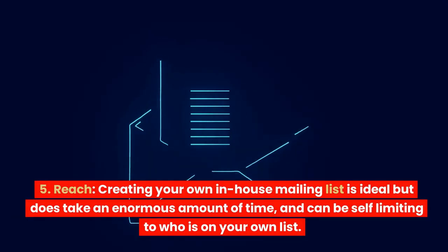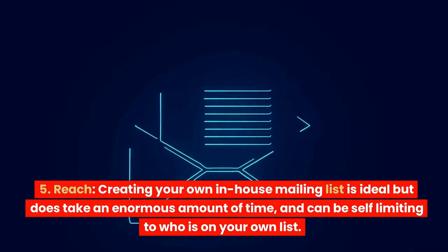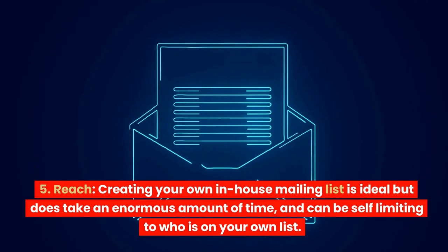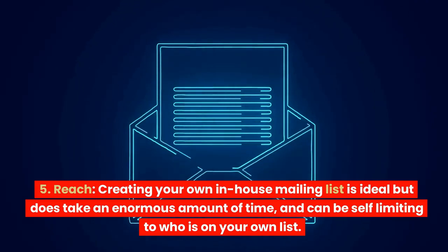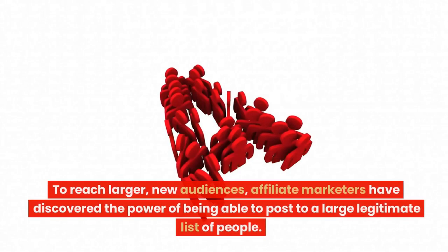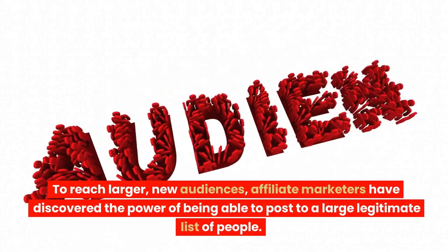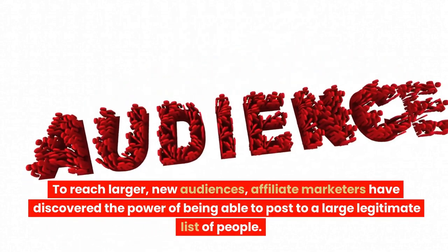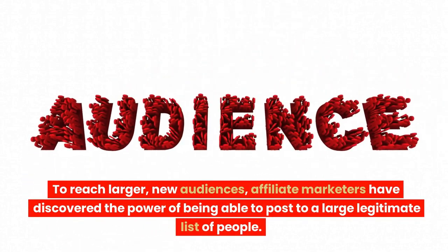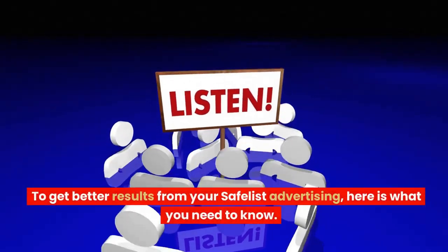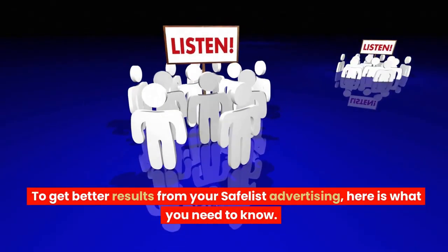Number five, reach — creating your own in-house mailing list is ideal but does take an enormous amount of time and can be self-limiting to who is on your own list. To reach larger new audiences, affiliate marketers have discovered the power of being able to post to a large, legitimate list of people.